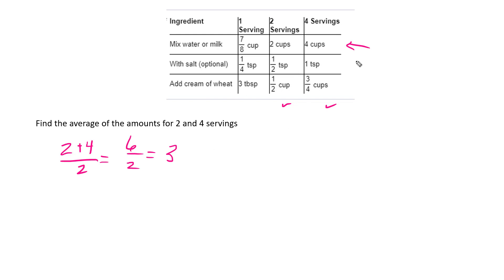All right, the next one, find the average. This is where fractions come in. So I have 1 teaspoon, 1 half teaspoon, plus 1 teaspoon.